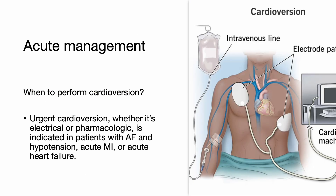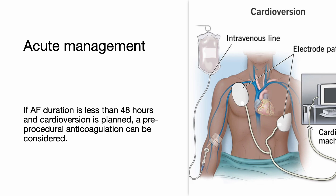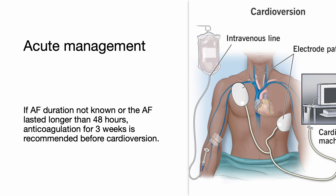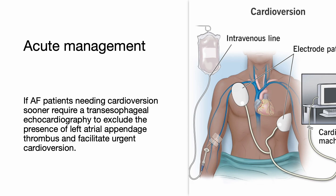Urgent cardioversion, whether electrical or pharmacologic, is indicated in patients with atrial fibrillation and hypotension, acute MI, or acute heart failure. If the atrial fibrillation duration is less than 48 hours and cardioversion is planned, pre-procedural anticoagulation can be considered. If the atrial fibrillation duration is not known or lasted longer than 48 hours, anticoagulation for 3 weeks is recommended before an elective cardioversion. If the patient needs cardioversion sooner, this requires a TEE to exclude the presence of left atrial appendage thrombus.